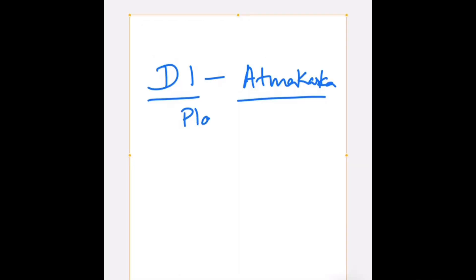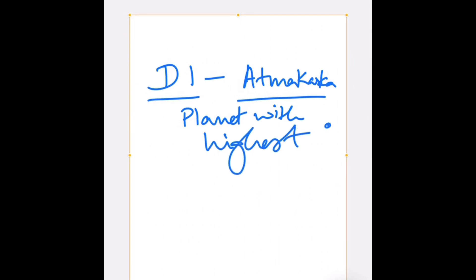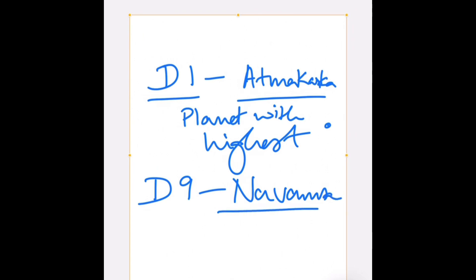To predict your Isht Devta, you have to see your D1 chart and find your Atmakarat. Atmakarat is the planet with the highest degree. So step 1 is to see which planet is at the highest degree in your D1 chart — that is your Atmakarat.